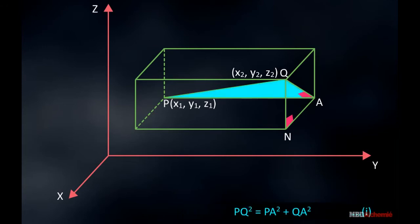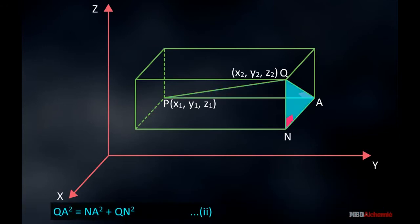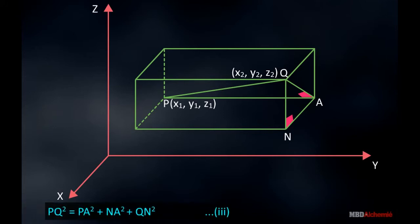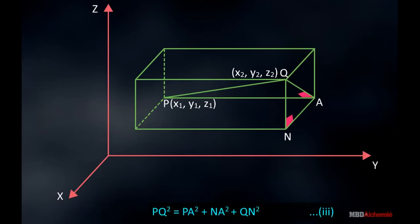Let this be equation 1. And in right-angle triangle QAN, QA square is equal to AN square plus QN square. Let this be equation 2. On putting the value of QA square in equation 1, we get PQ square is equal to PA square plus NA square plus QN square. Let this be equation 3.